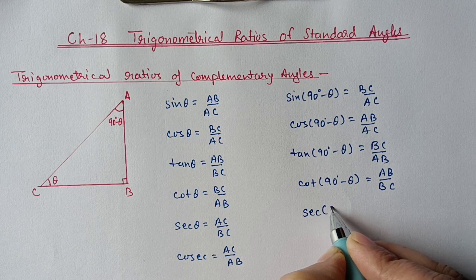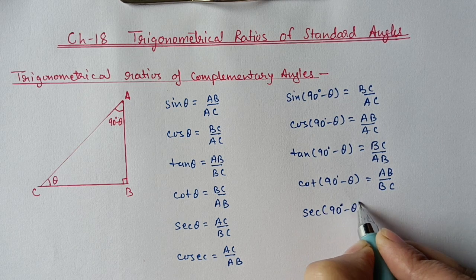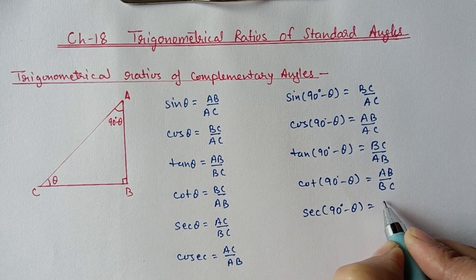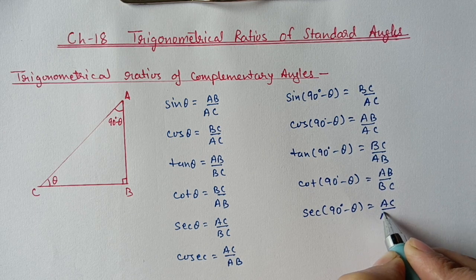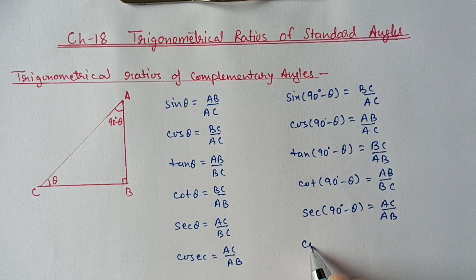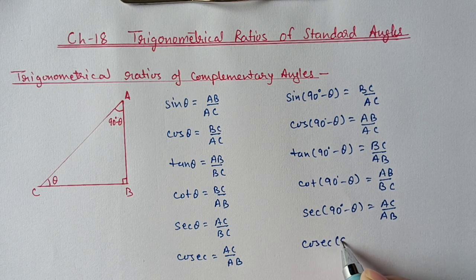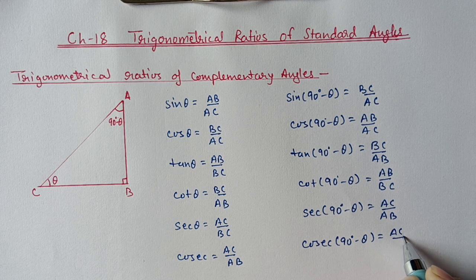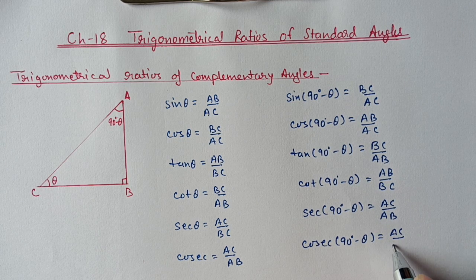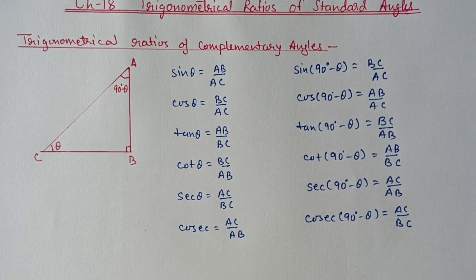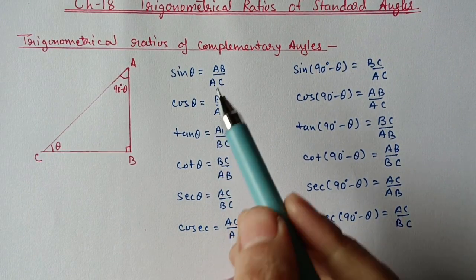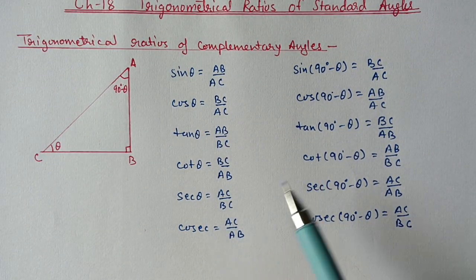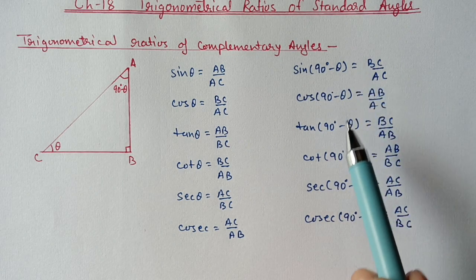Continuing the ratios for angle (90 − θ): sec(90 − θ) = hypotenuse/base, and cosec(90 − θ) = hypotenuse/perpendicular. So we have obtained all the ratios for θ and for 90 minus θ.